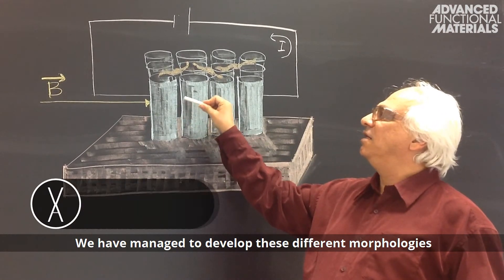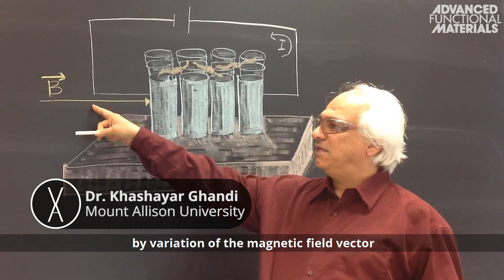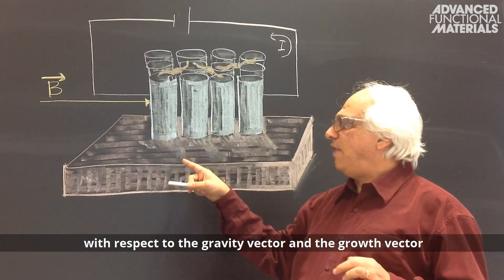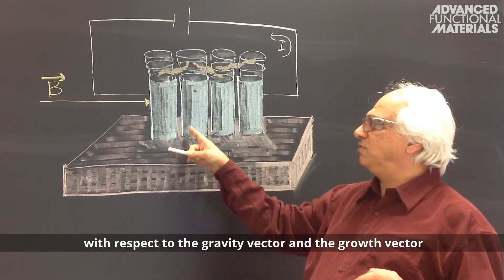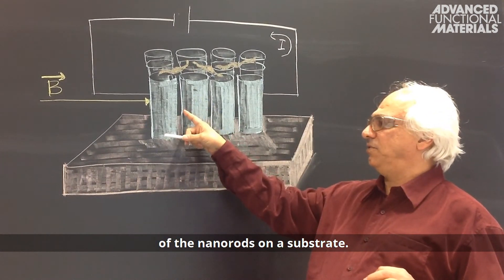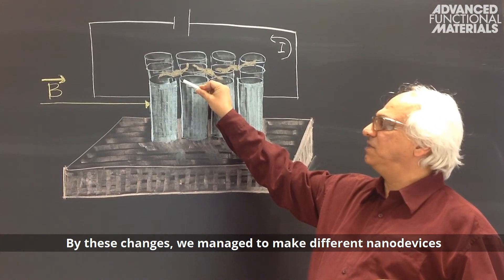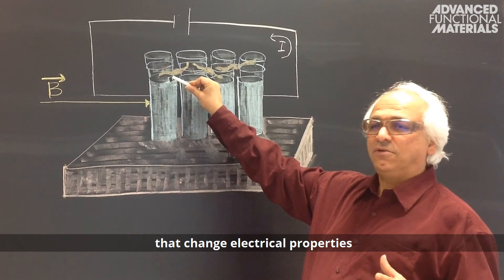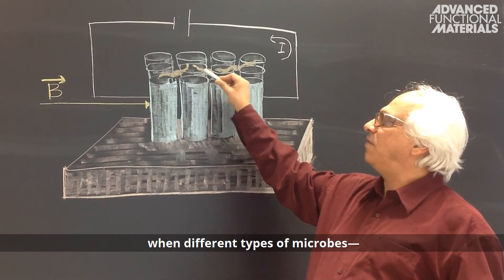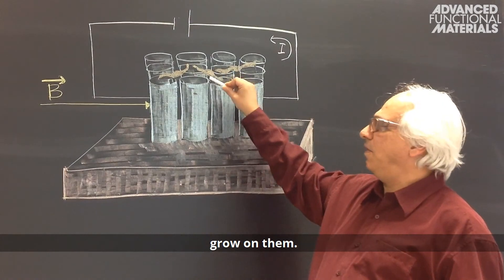We managed to develop these different morphologies by variation of the magnetic field vector with respect to the gravity vector and the growth vector of the nano-rods on a substrate. By these changes, we managed to make different nano-devices that change electrical properties when different types of microbes and different concentrations of them grow on them.